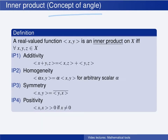First, additivity: the inner product of the sum x plus y with the element z is the same as the sum of the inner product between x and z and the inner product between y and z. Then the function needs to have a homogeneity property, meaning that if we multiply the first element by an arbitrary scalar alpha, then the resulting inner product is identical to the inner product of the original elements x and y, but scaled by the same scalar.